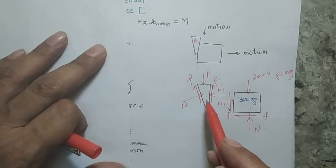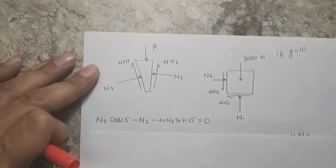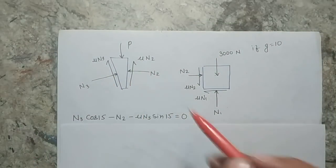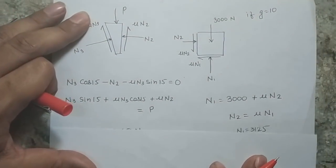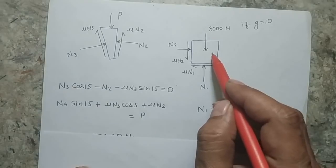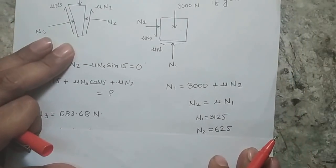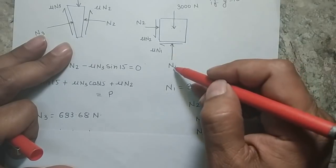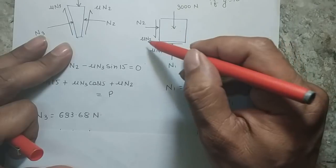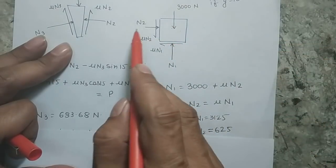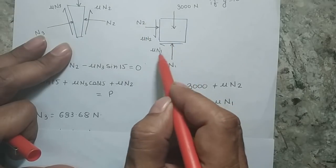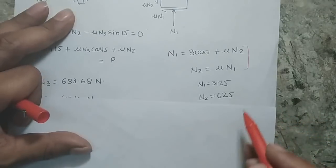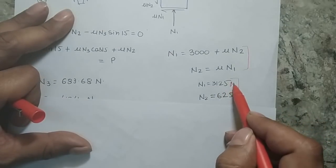Writing equilibrium equations for the block: in the vertical force balance, N1 is balanced by the 3000 N weight and the downward friction force μN2. In the horizontal force balance, N2 is balanced by the friction force μN1. Solving these two equations simultaneously gives N1 = 3125 N and N2 = 625 N.